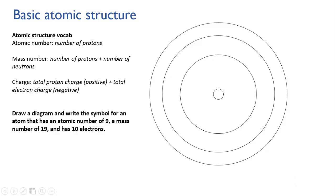Let's work through an exercise. I've given you the atomic structure vocabulary here: atomic number, mass number, and charge, and how you work them out. We're going to draw a diagram and write the symbol for an atom that has an atomic number of 9, a mass number of 19, and has 10 electrons.